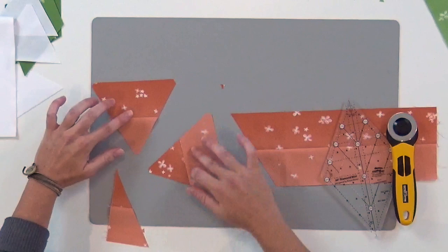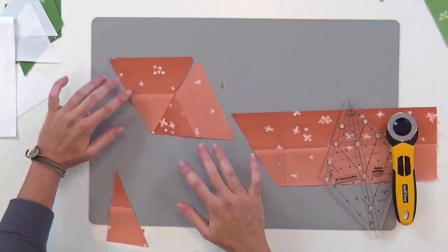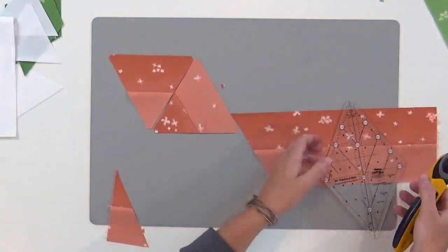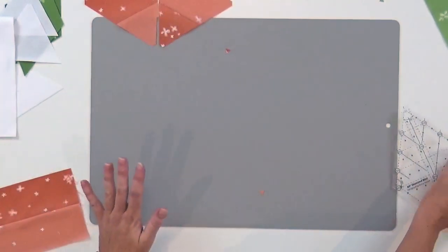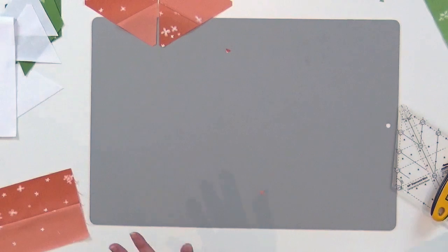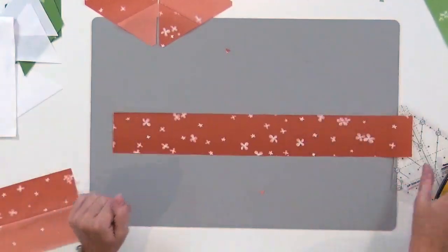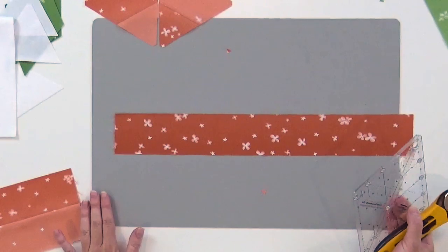You take these triangles and you'll put them together. Six of them creates the center of the flower. Now for the outside edge pieces, got some darker strips here. We're going to do trapezoids from this one.